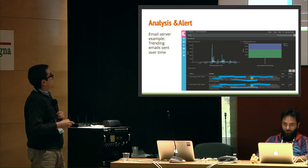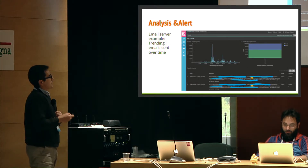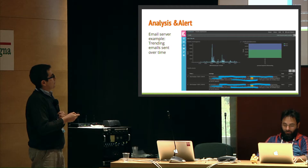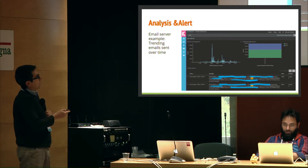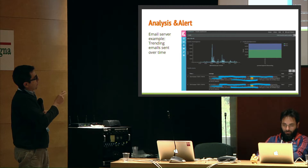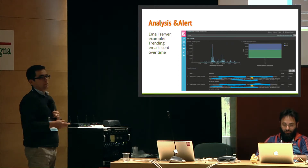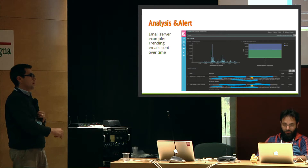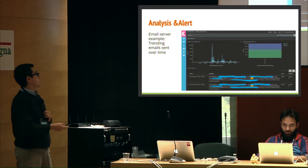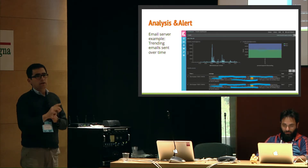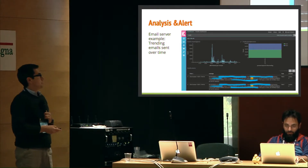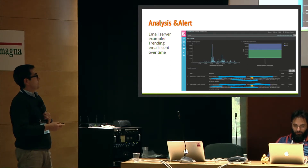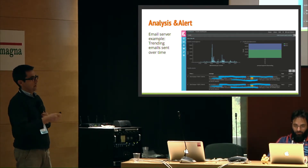A real-world example: for our email servers, we graph emails sent per second and per minute. If there are spamming issues or someone is overusing email sending, we can quickly see who was the source of that traffic. It's not a fully automatic solution, but it gives us the advantage of being able to act quickly on issues.